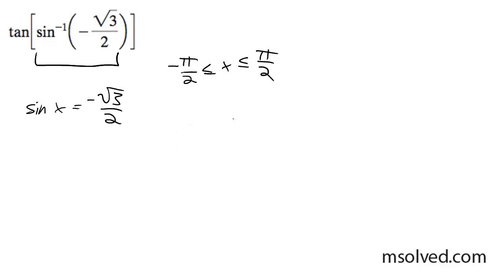So with negative root 3 over 2 for sine and the limits negative pi over 2 to pi over 2, it's going to be in quadrant 4, which means it's going to be down here, which is negative pi over 3. So this is negative root 3, this is 1, this is 2.